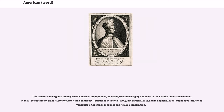This semantic divergence among North American Anglophones, however, remained largely unknown in the Spanish-American colonies. In 1801, the document titled Letter to American Spaniards — published in French in 1799, in Spanish in 1801, and in English in 1808 — might have influenced Venezuela's act of independence in its 1811 constitution.